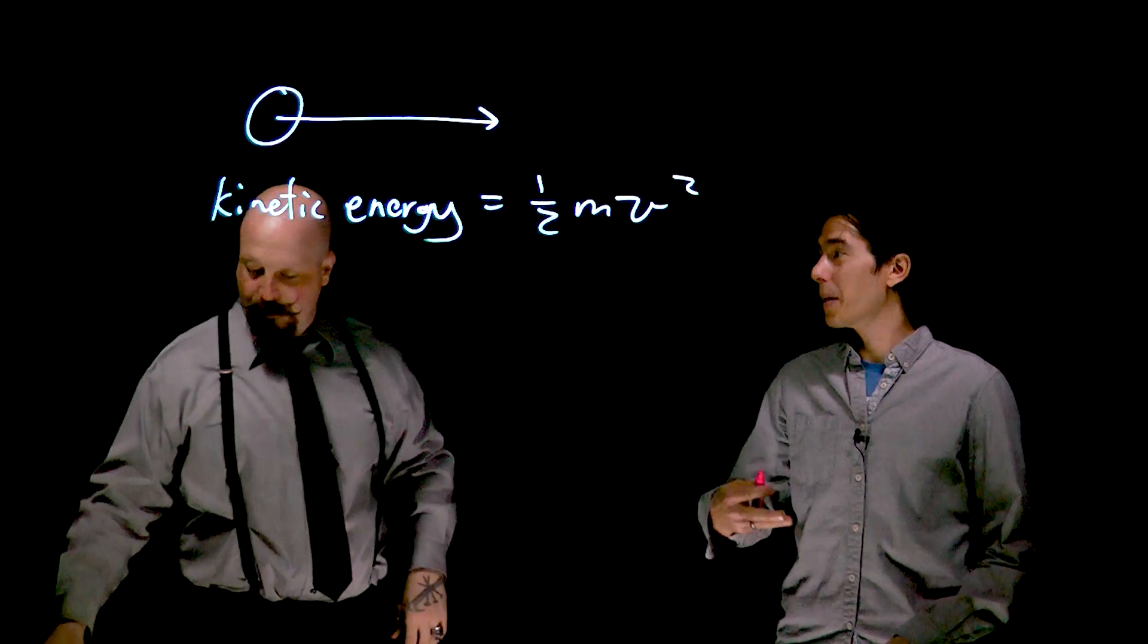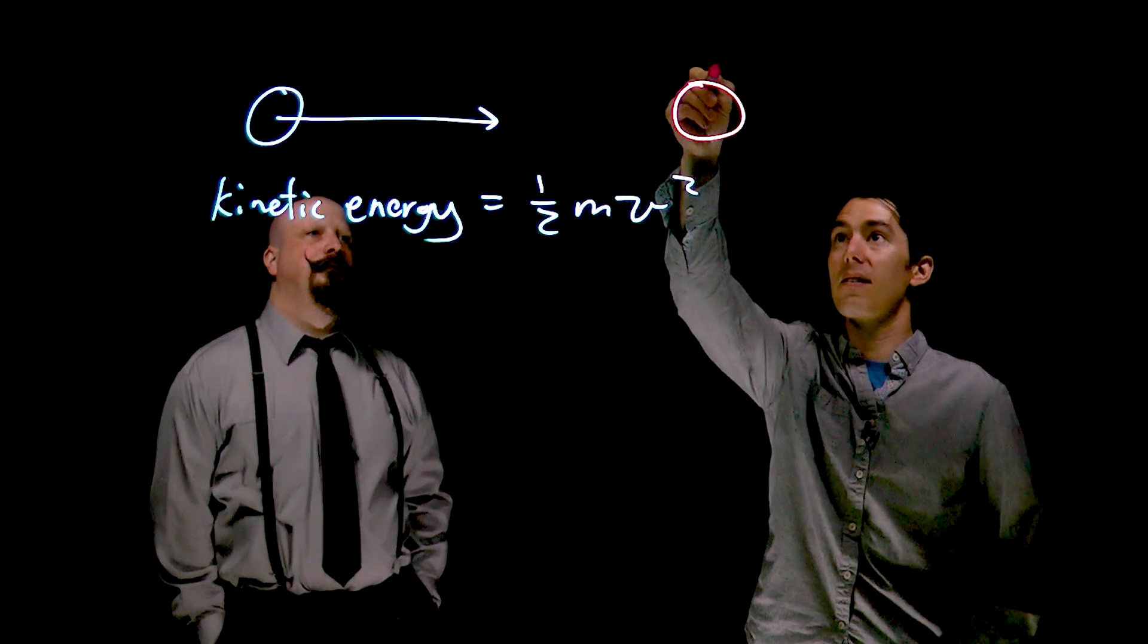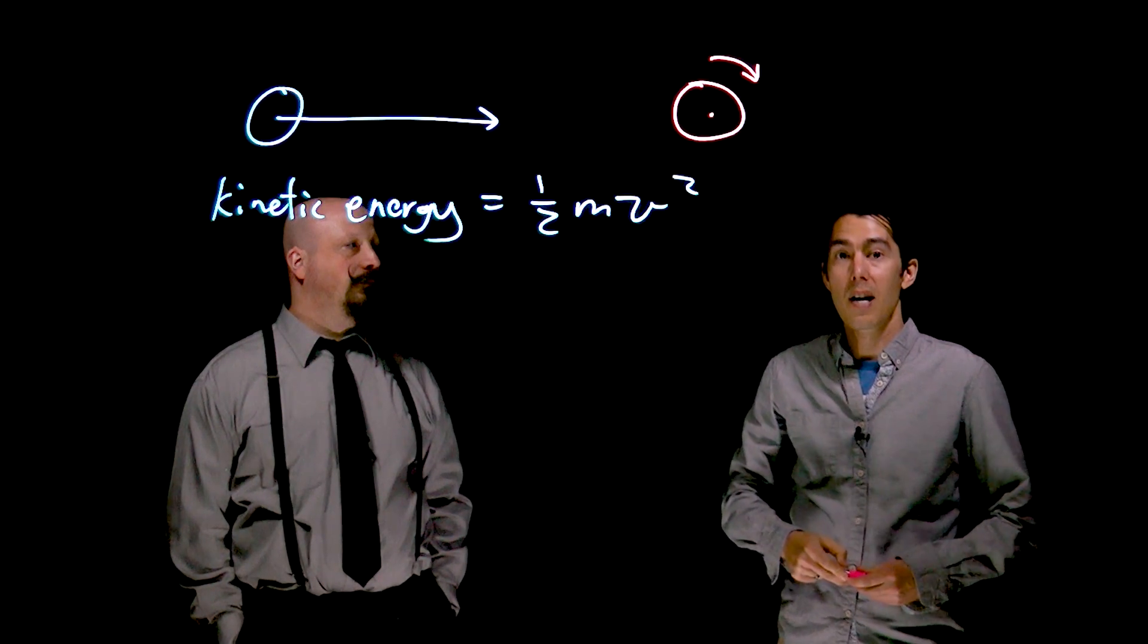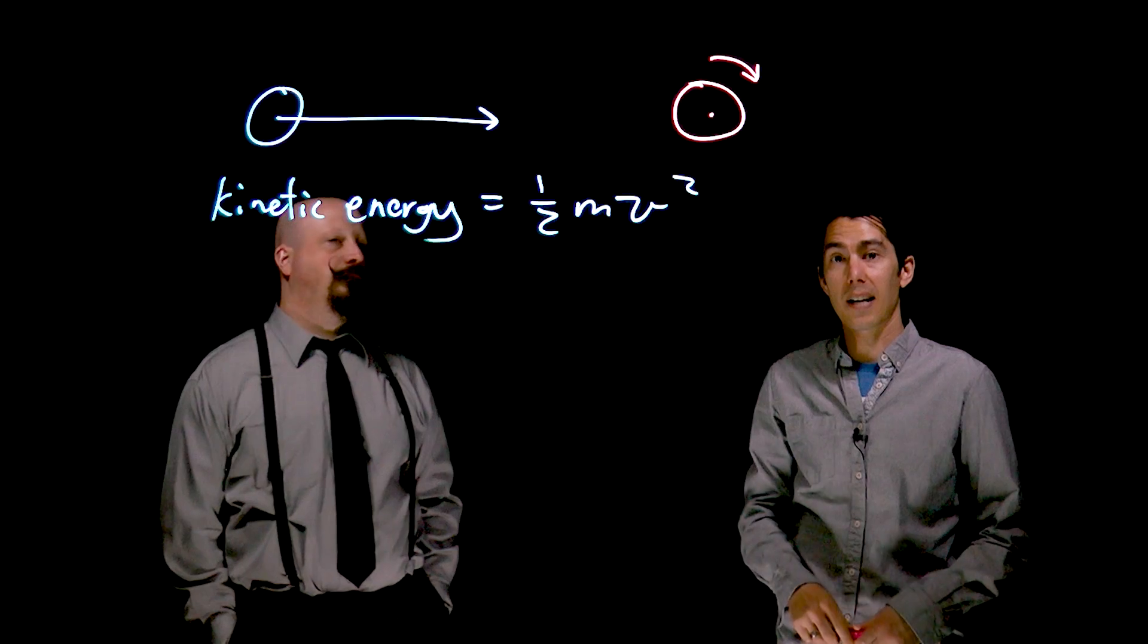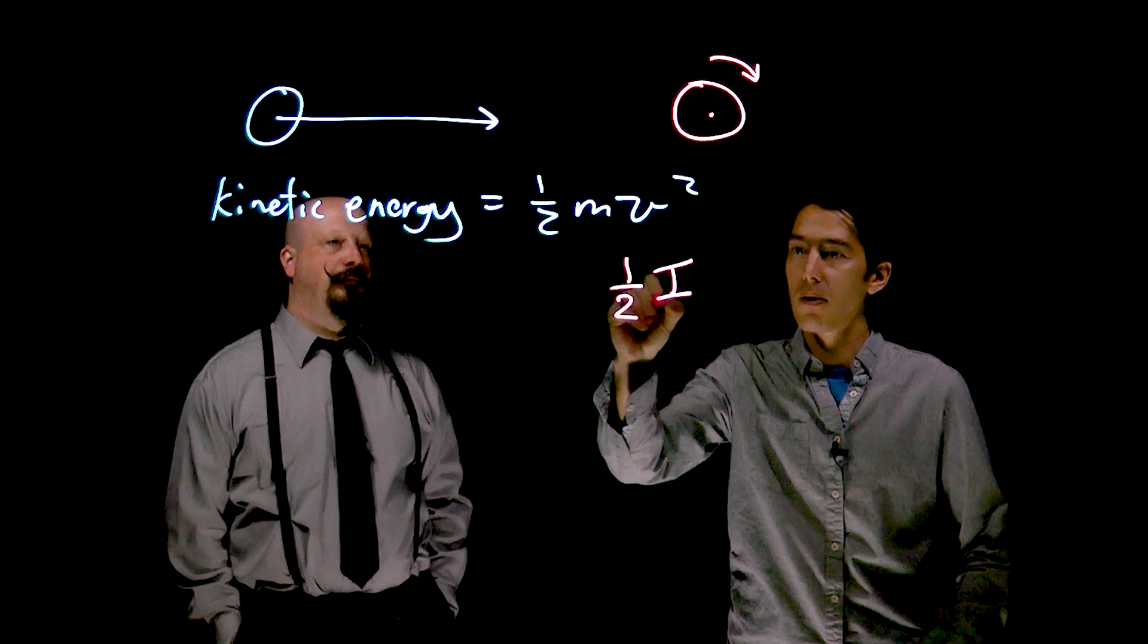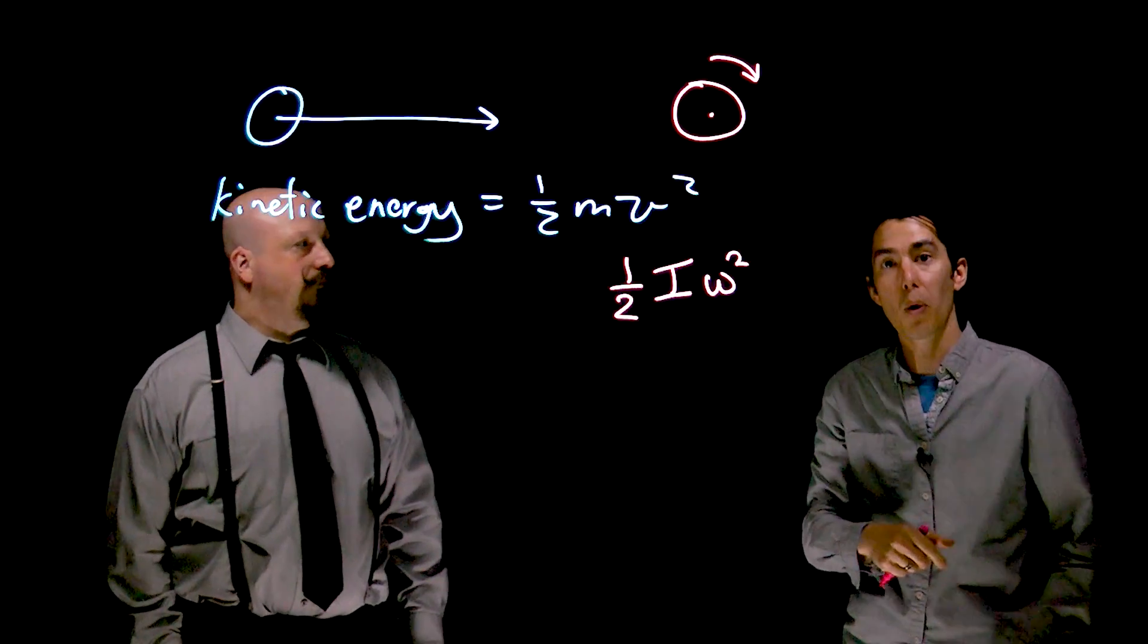But now we've also been talking about motion that's rotational, something that's sitting in place but spinning on its axis at its center. There's still motion, there's still a kinetic energy, but we can describe that now as one-half I omega squared, where omega is the angular velocity and I is the moment of inertia.